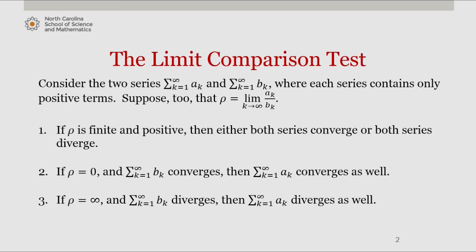And if rho is infinity and the series from k equals 1 to infinity of b sub k diverges, then the series from k equals 1 to infinity of a sub k diverges as well.